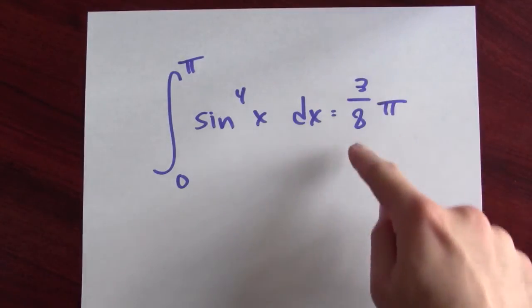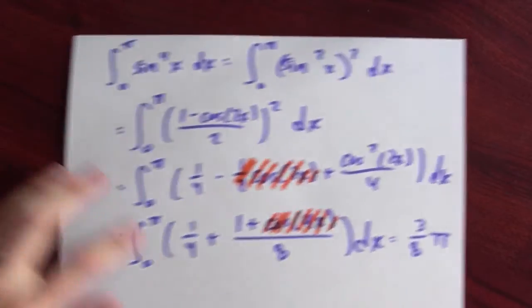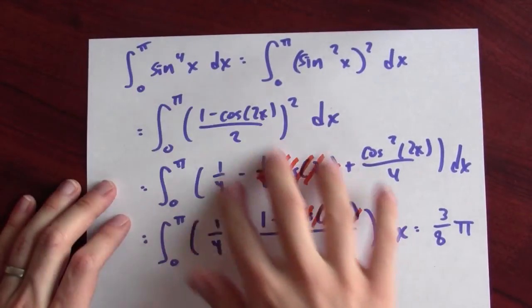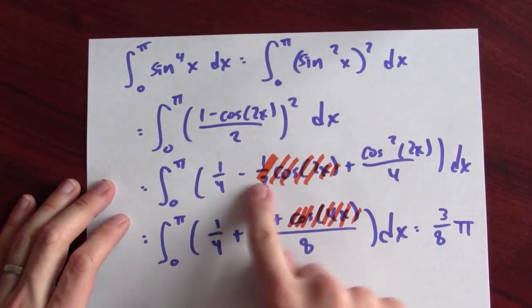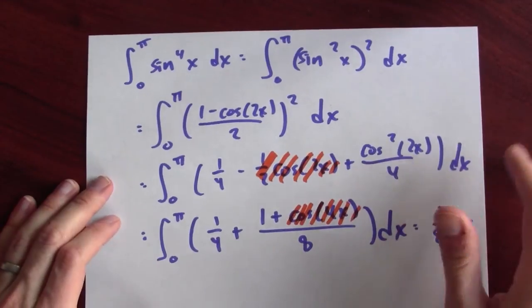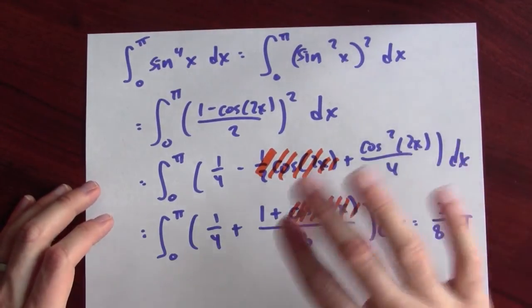This turns out to be not so bad. So yeah, I'm getting an answer of 3 eighths pi, but that's not really the point, right? The cool thing about setting this up as a definite integral is really just how easy it is to do the calculation, since I can throw away some terms along the way that I know would integrate to 0.